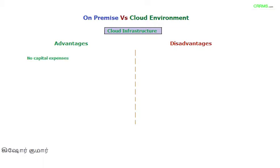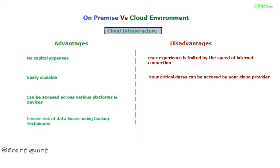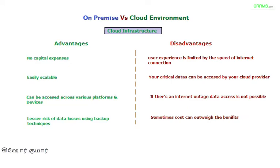For a third-party cloud infrastructure, advantages include: no capital expenses with a pay-as-you-go model, easy scalability for new capacity, accessible through various devices and platforms, and less risk of data loss due to backup techniques. Disadvantages: internet speed is a key parameter for user experience, critical data can be accessed by the cloud provider, data access is not possible during internet outages, and sometimes costs can outweigh the benefits.